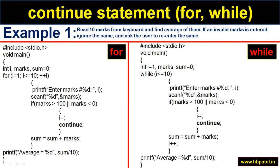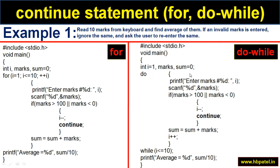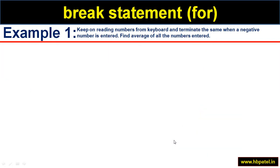The same marks program is also written using a while loop and a do-while loop. In the while loop version, i=1 is initialized before the loop, i++ is placed at the end, and the condition is in the while header. In the do-while version, i=1 is initialized before, the condition is in the while clause at the end, and i++ is the last statement of the do-while body. Otherwise, the rest of the logic is the same.